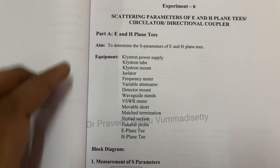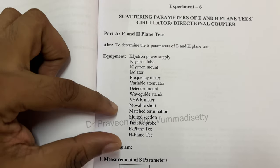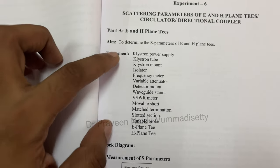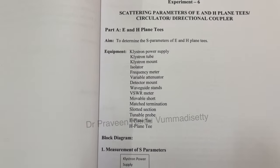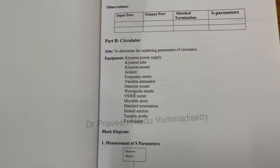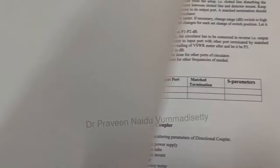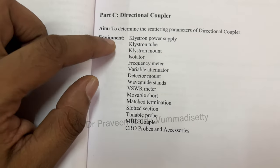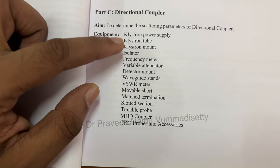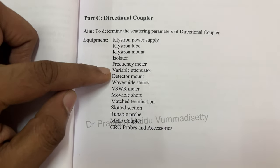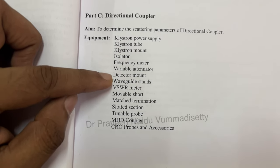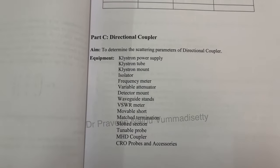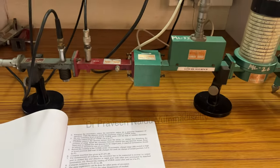In the case of E-plane T we used this list of equipment. This equipment can be used with a source of reflex klystron or a Gunn diode. In the previous video we used a Gunn diode as a power supply and measured the S parameters. In this video we are going to use klystron power supply or Gunn power supply, isolator, frequency meter, variable attenuator, detector mount, waveguide stands, VSWR meter, and other required components. The bench we are going to use is the same microwave bench seen in previous videos.